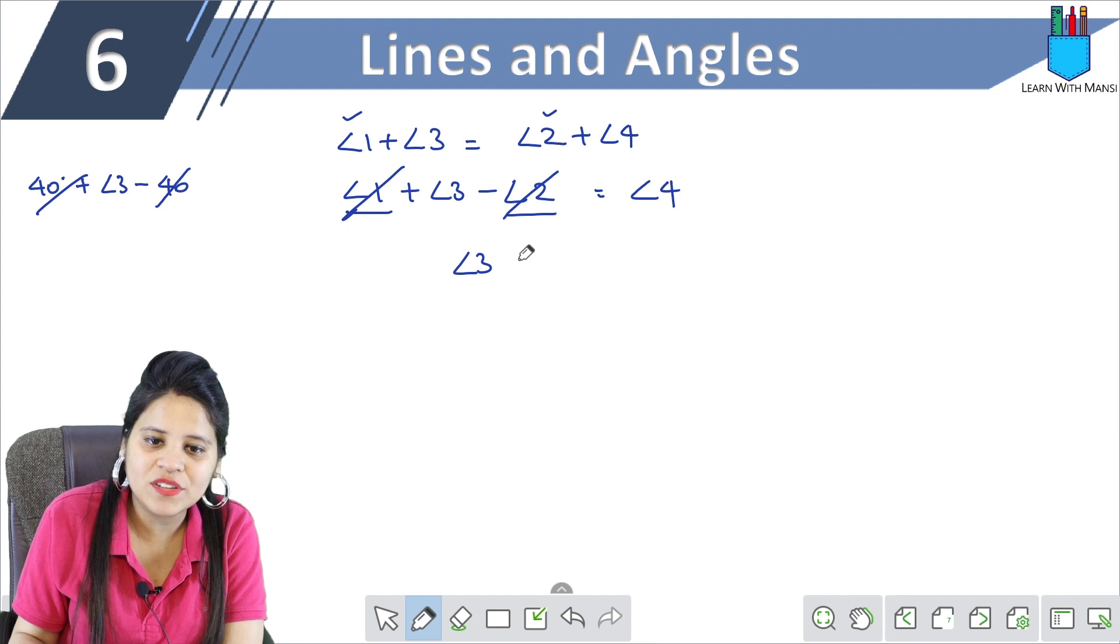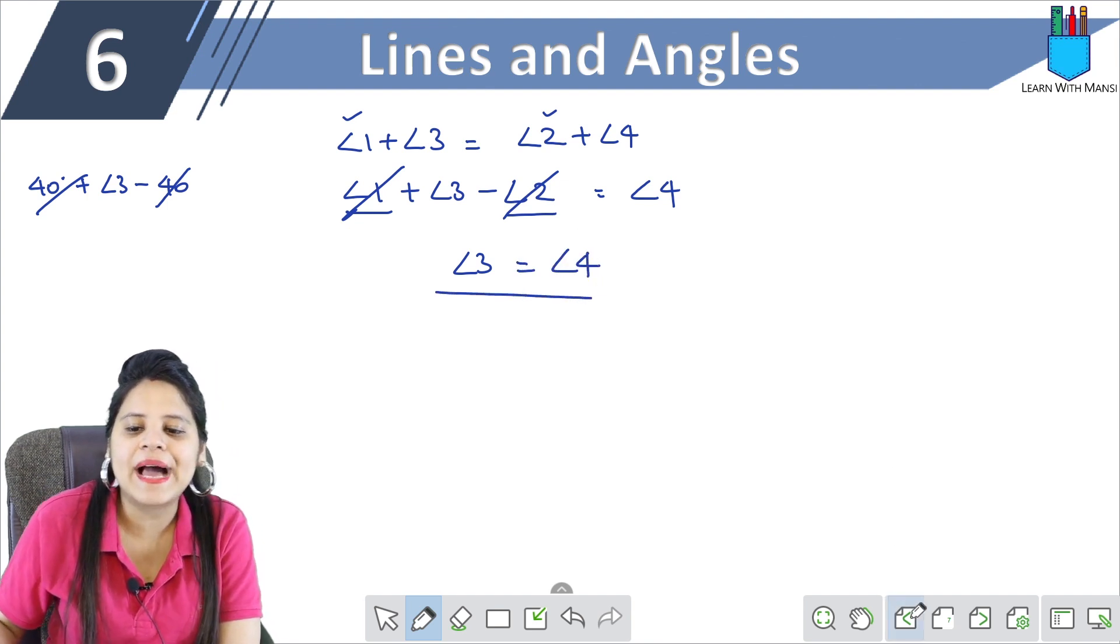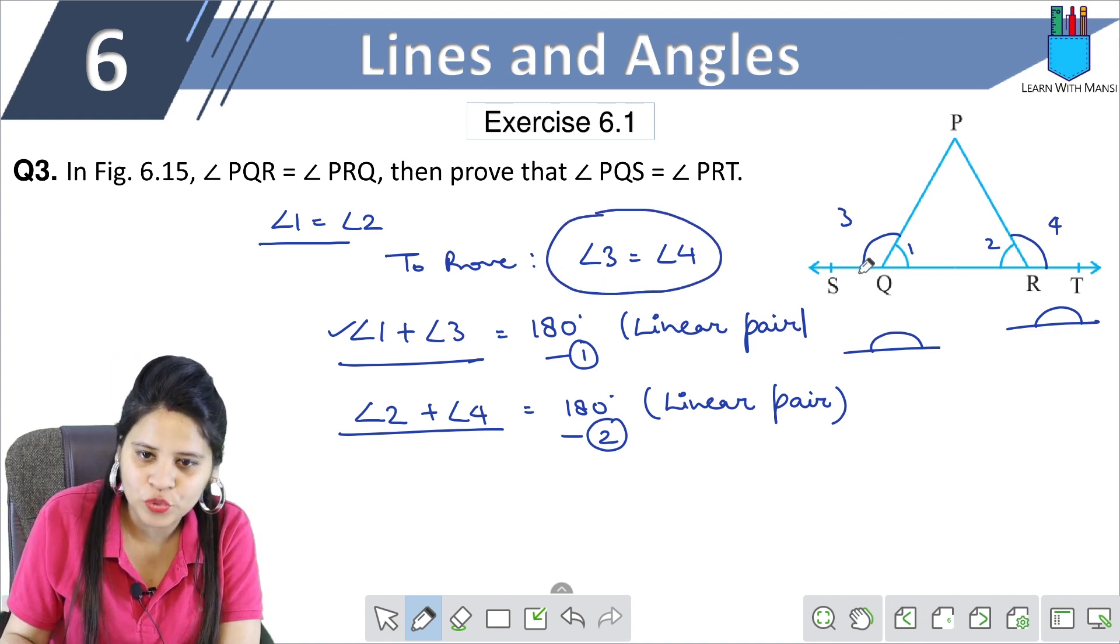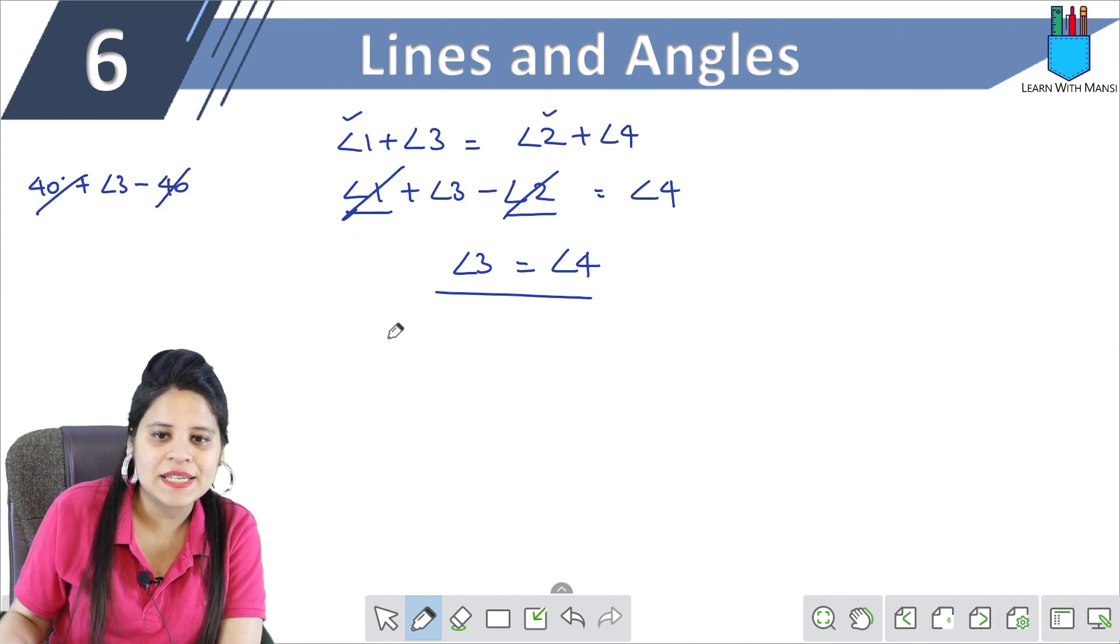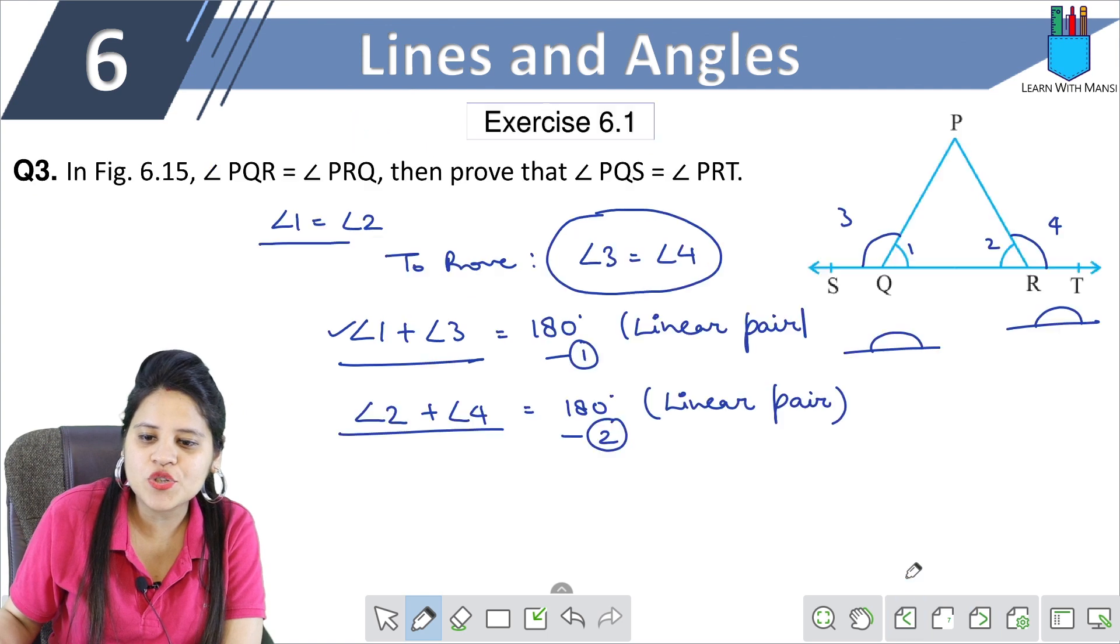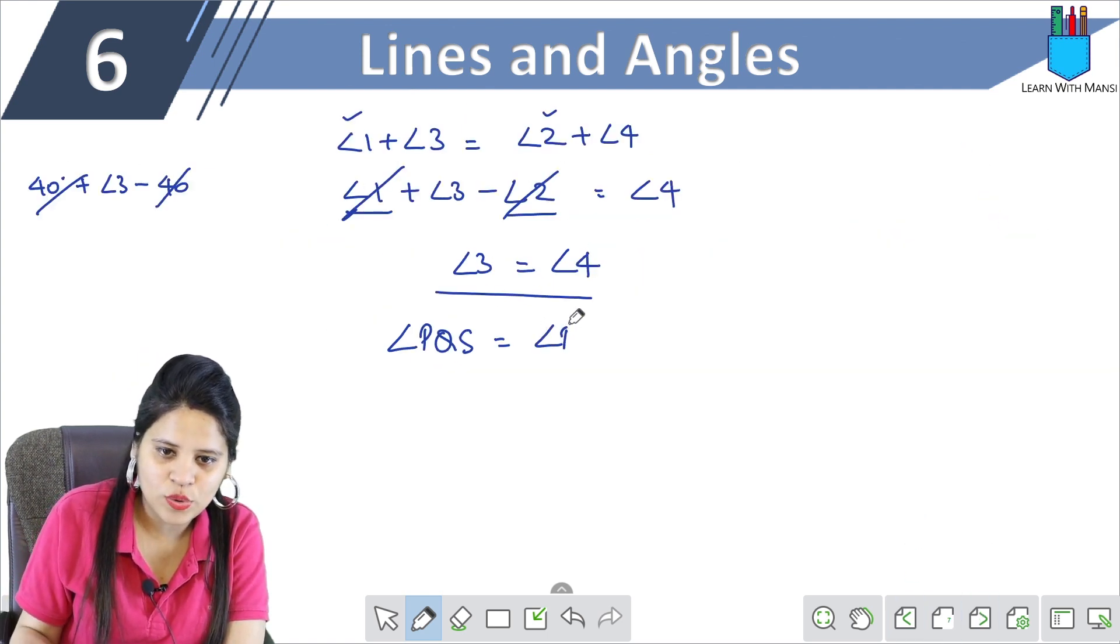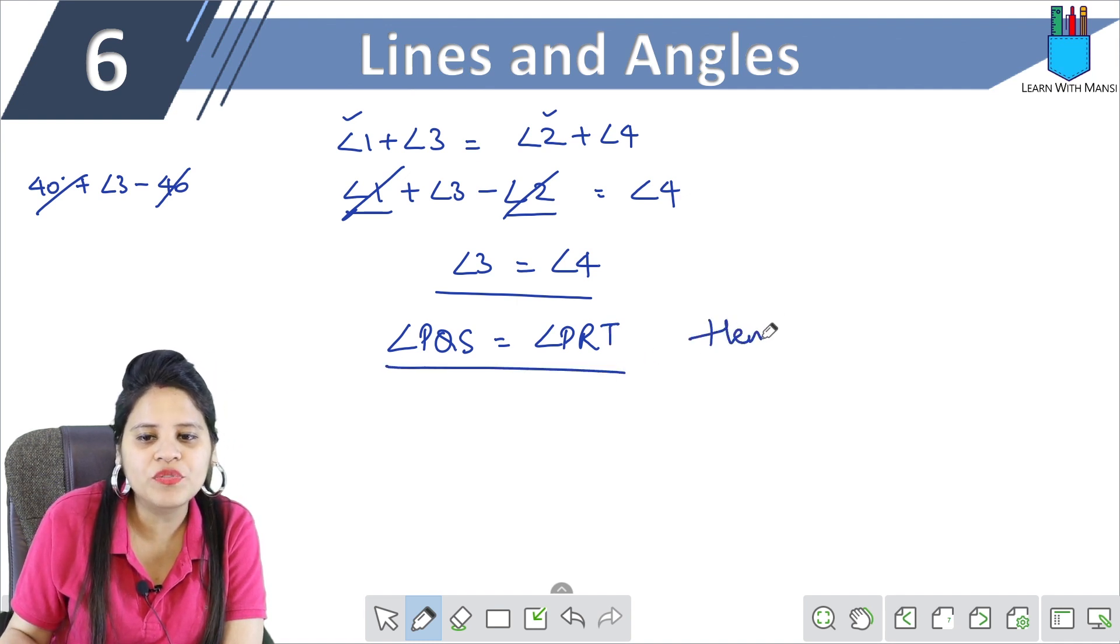So here we have left angle 3 and here we have left angle 4. So angle 3 is PQS. So angle PQS equals to angle 4 is PRT, equals to angle PRT. So this was to be proved and now we have proved it.